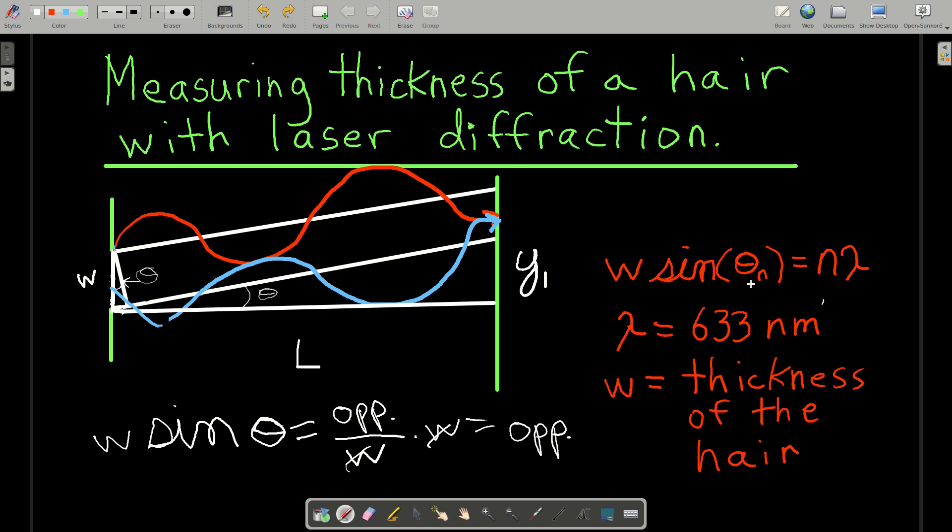The N, what does that mean? When you get destructive interference, you get a dark spot like you guys saw. You saw more than one dark spot on each side of the bright spot. The bright spot would be right here, directly across.